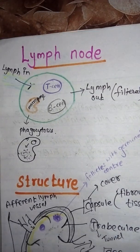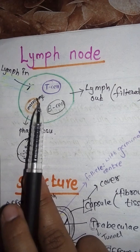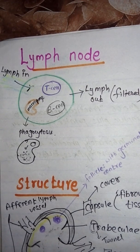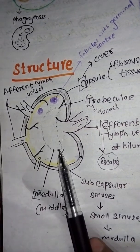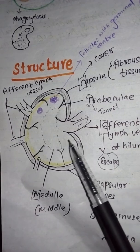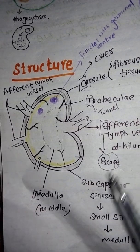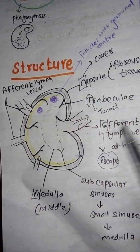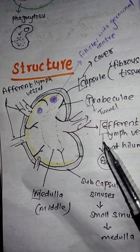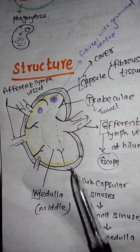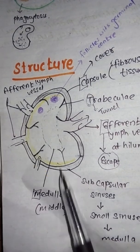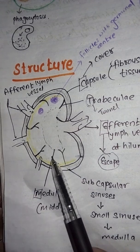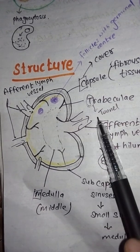The main purpose of lymph entering the lymph node is filtration before it is passed to the circulation. Lymph enters the lymph node through the afferent lymph vessel and exits through the efferent lymph vessel. A simple trick to remember: E for efferent, E for escape or exit — meaning going outside. The afferent vessels are present in greater numbers; lymph can enter the node from multiple directions, but exits through only one way — the efferent lymph vessel.